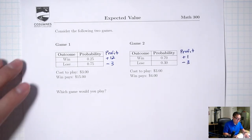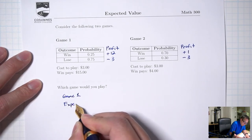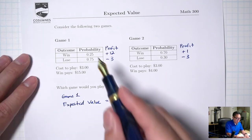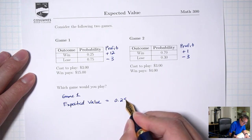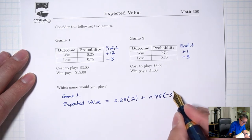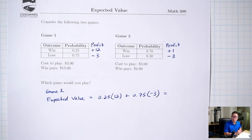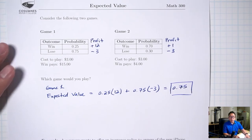Now let's calculate the expected value, starting with game one. The way you calculate expected value is: probability times profit plus probability times profit. So that's 0.25 times 12 plus 0.75 times negative three, which gives us 0.75.